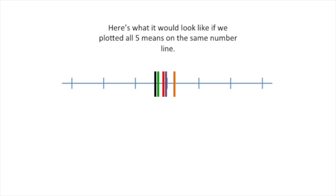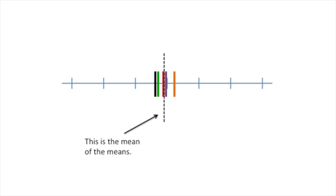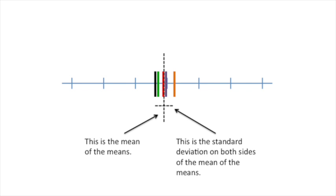Here's what it would look like if we plotted all five means on the same number line. This is the mean of the means, and this is the standard deviation on both sides of the mean of the means.